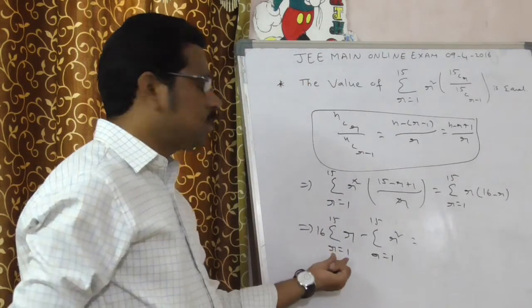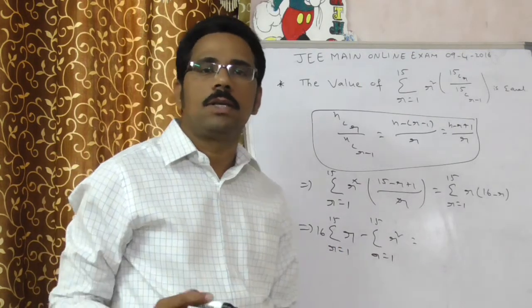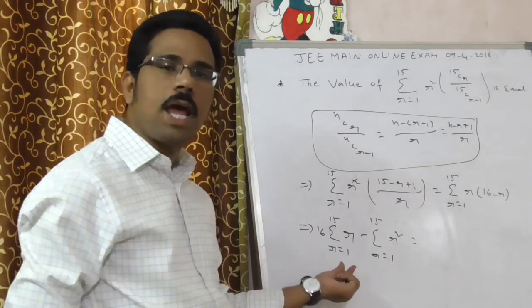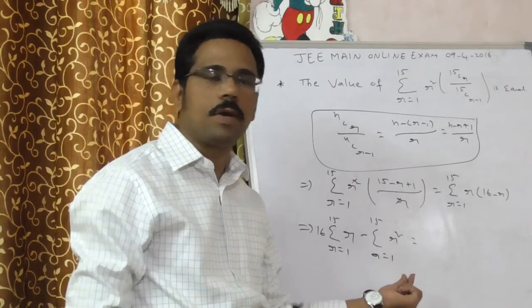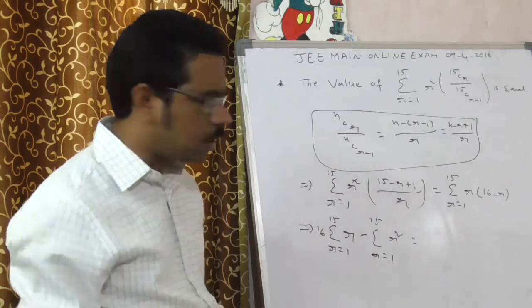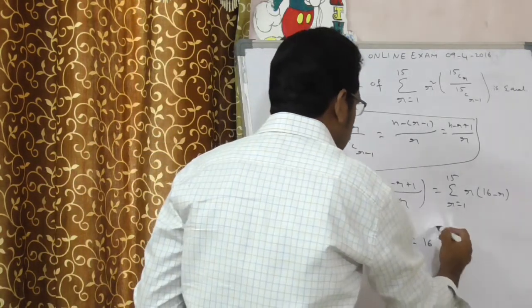Now first sigma is nothing but the first summation, sum of the first n natural numbers. Here r square, sigma r square, sum of the squares of n natural numbers. Here n equals 15. Just apply those formulae, basic formulae.